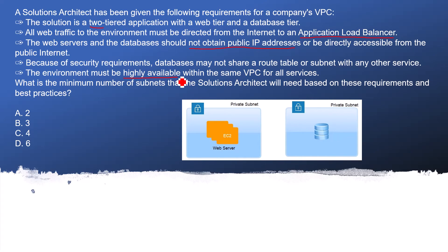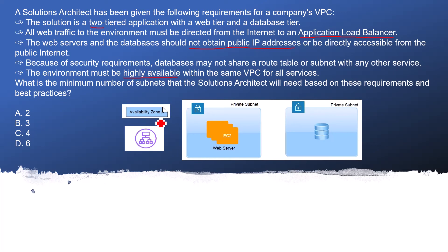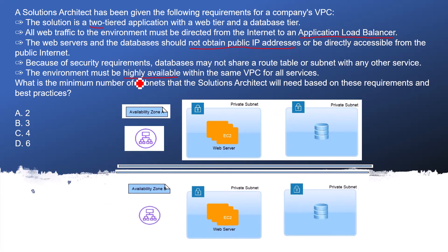We should have two private subnets - one for the web server and one for the database server. This fulfills the two-tier application requirement, and also satisfies that the database may not share a route table or subnet. Application load balancer is covered, servers not obtaining a public IP means they are in the private subnet, and the route table separation is also covered. Now the last requirement is must be highly available, so it should be deployed into multiple availability zones.